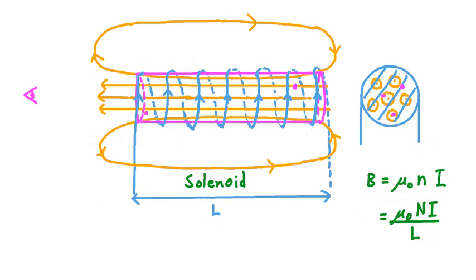When we use lowercase n, it means we don't need to know specifically how many total turns a solenoid has or exactly how long it is — we're just interested in the ratio capital N to L. So that's how we calculate the magnitude of the magnetic field within the loops of a solenoid. Within the turns of a solenoid, the direction of the field is always the same and will depend on the way the current points, but it will always point along the solenoid's long axis, either to the left or to the right when viewed side-on.